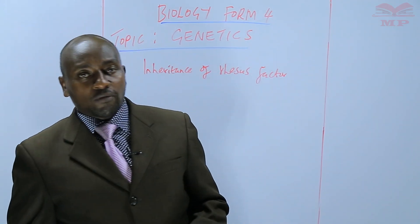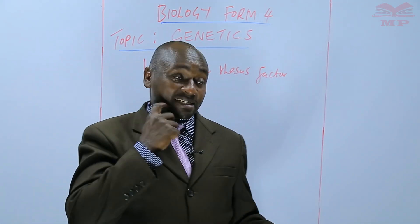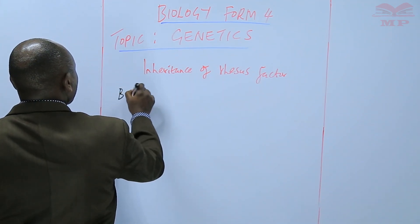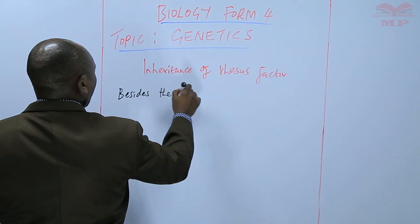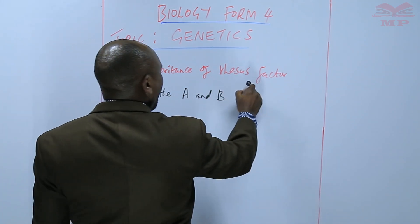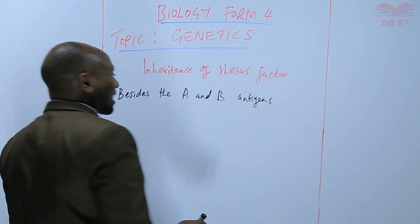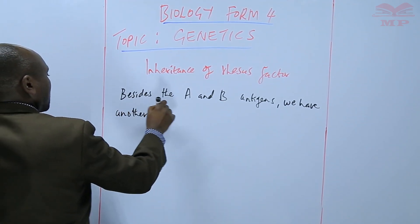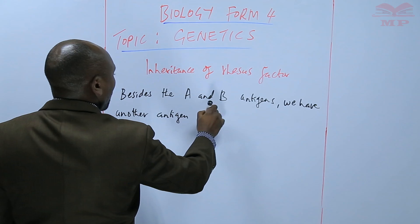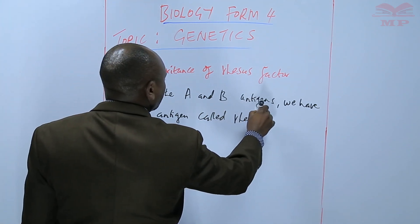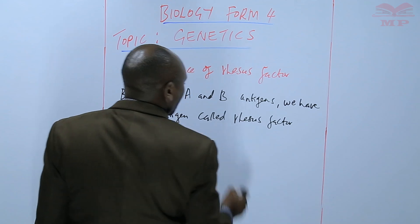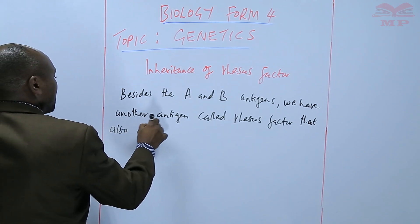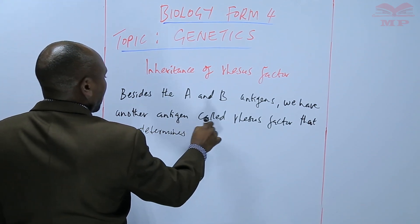Basically we can say that the Rhesus factor is inherited according to the normal Mendelian fashion of how the other alleles are inherited. So besides the A and B antigens, we have another antigen called the Rhesus factor that also determines the blood groups.